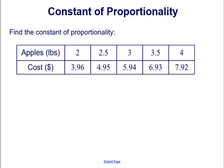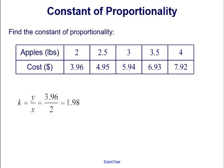Let's do another one. Here we have a table where we have the amount of apples in pounds and the cost of the apples. So to find the constant of proportionality, we'll randomly pick one of these ratios of the cost Y to apples X. So we randomly picked the first one, where you have two pounds of apples costing $3.96.